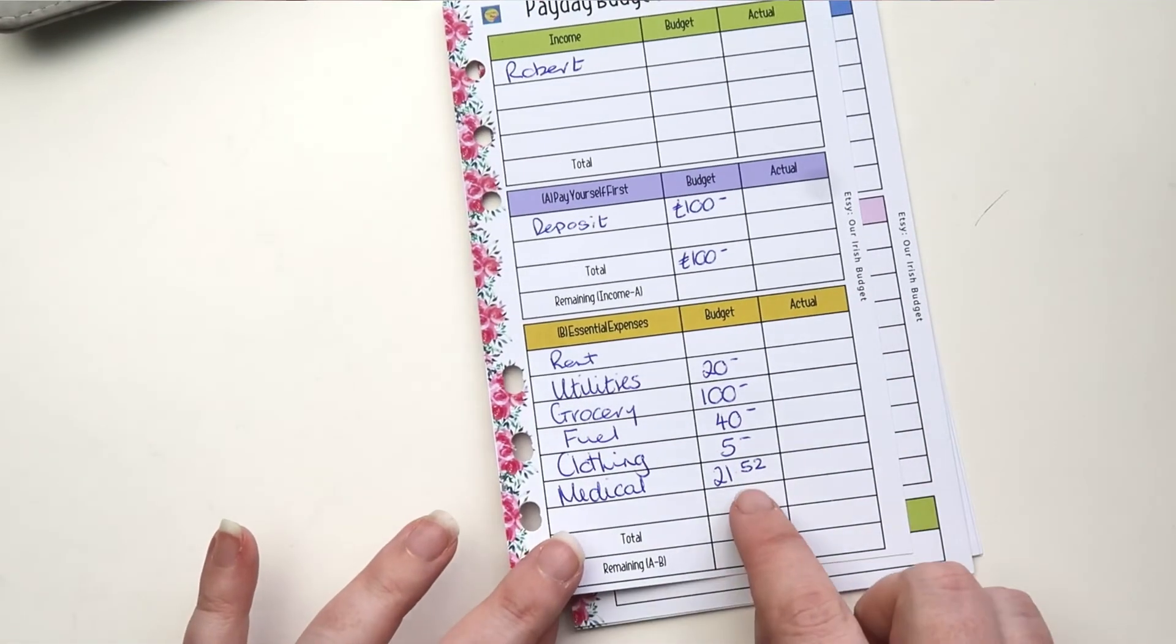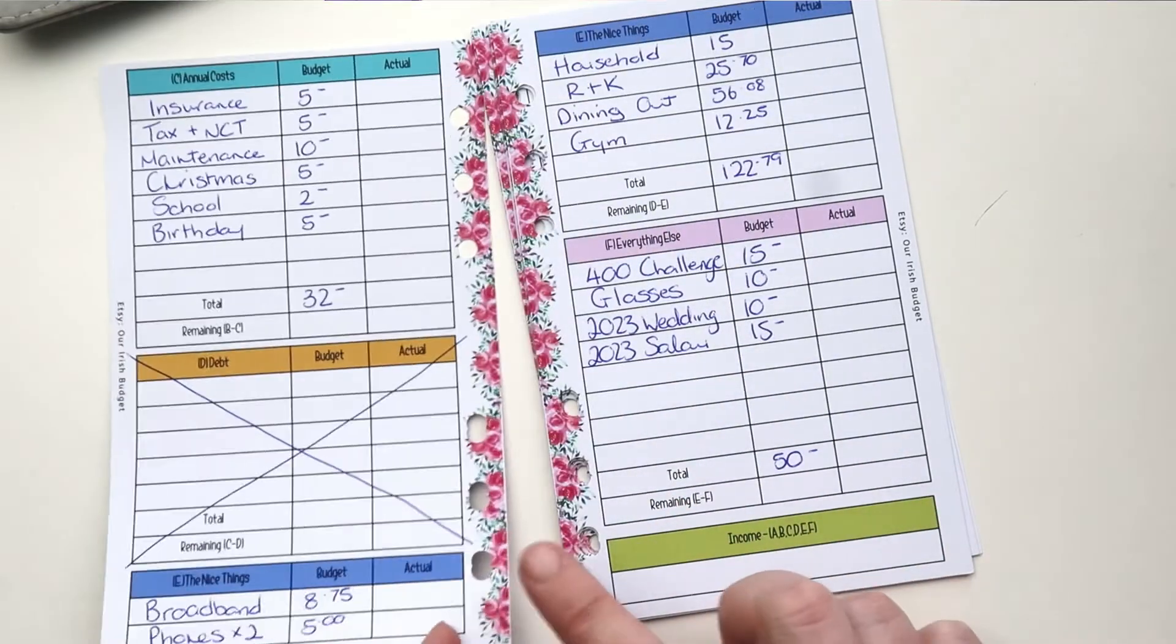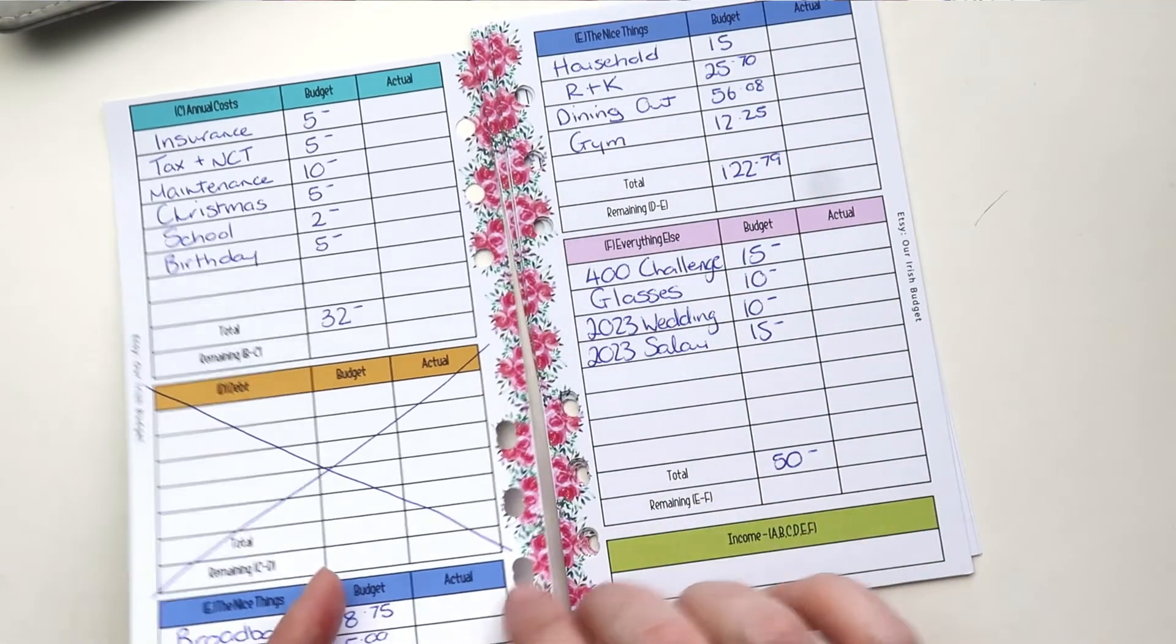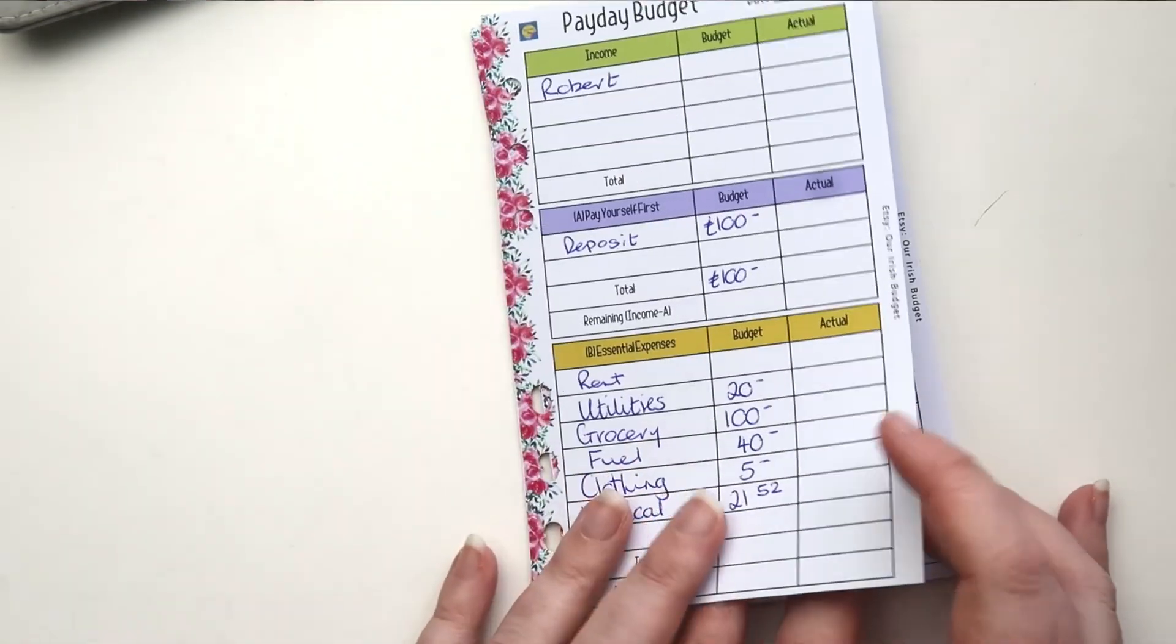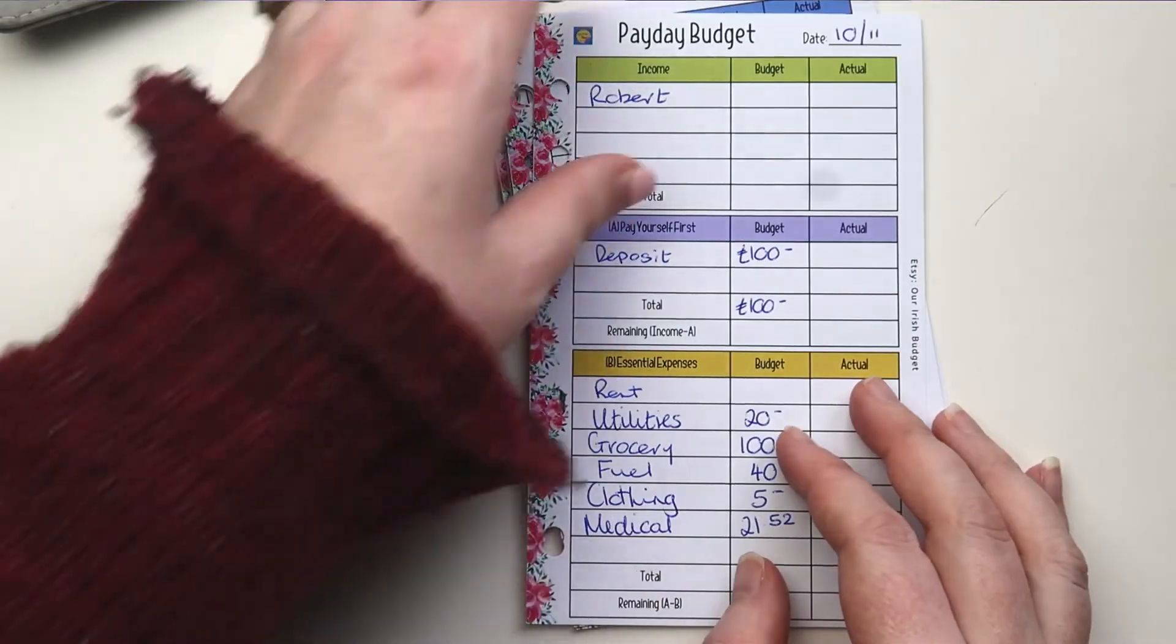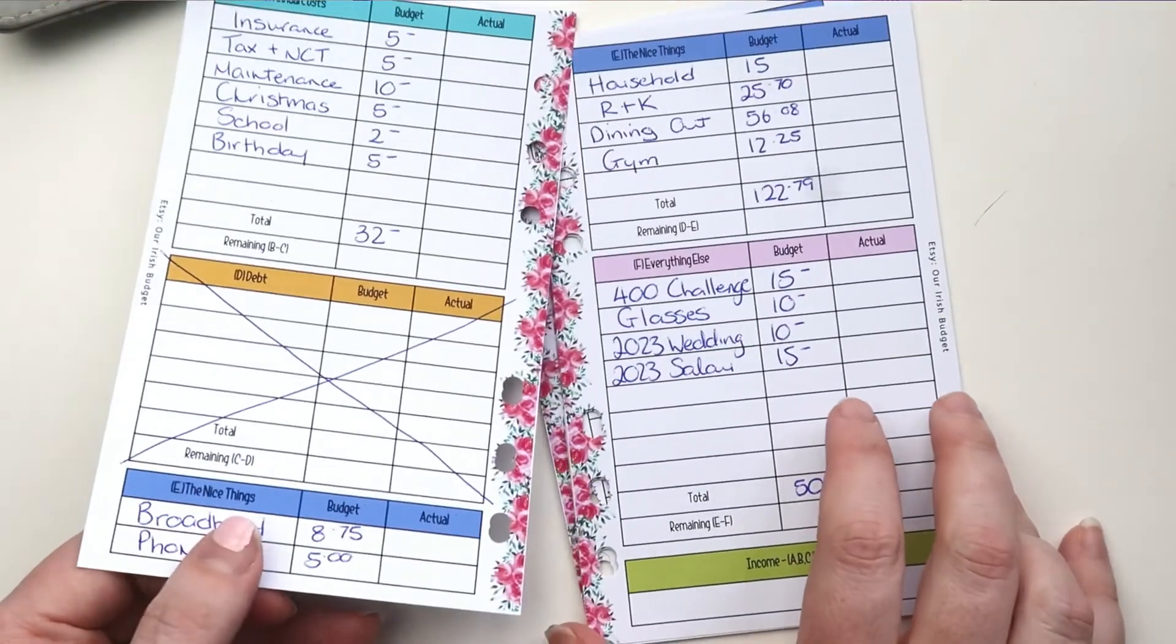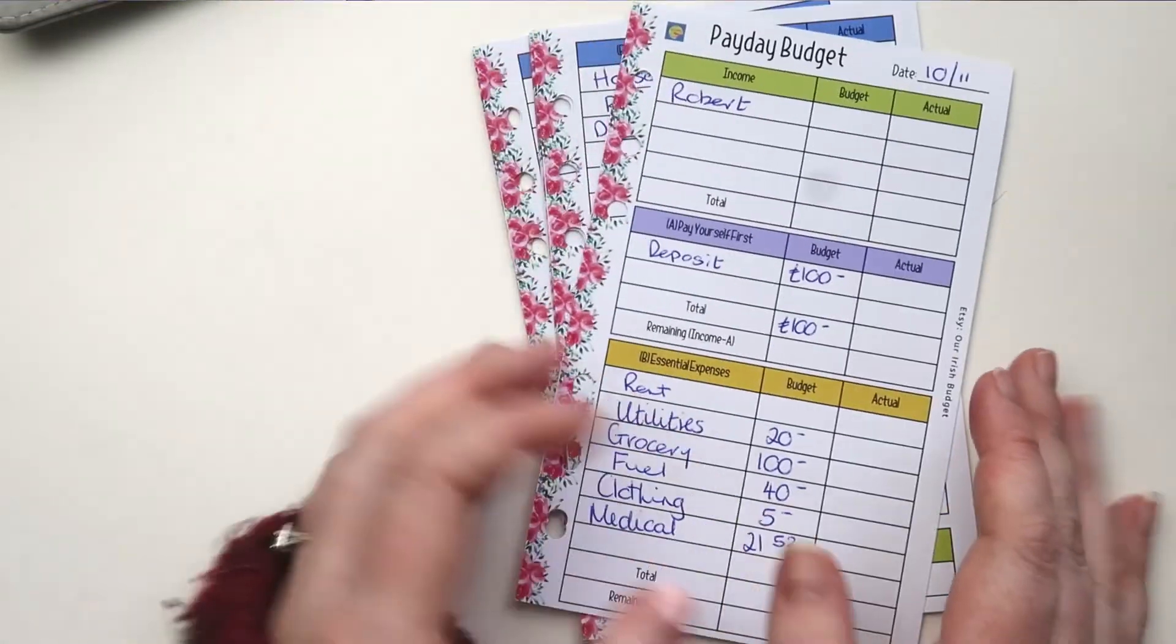So that is our budget for this coming week. I'm covering those overspends that we had in our check-in that I would have done in the last video. And it's important that you do that. You don't let that build up. You just kind of have to cut back on other areas in order to get yourself back on an even playing field. So that is it, guys.